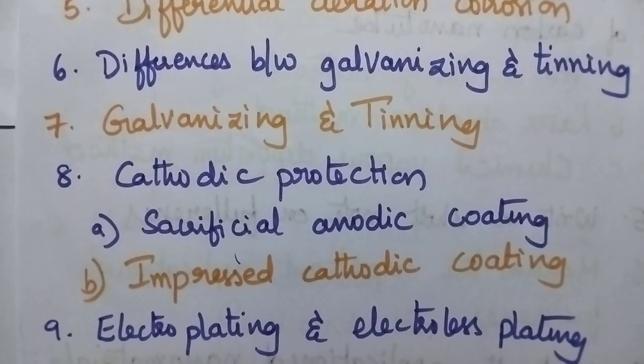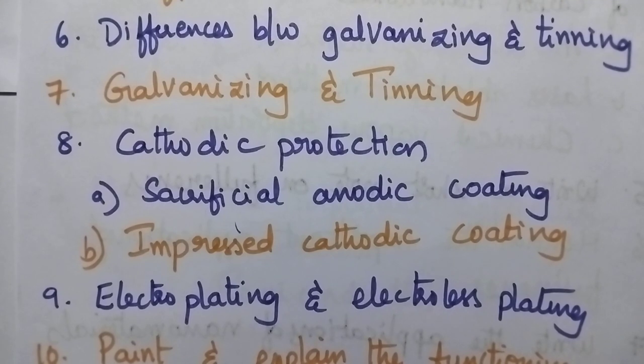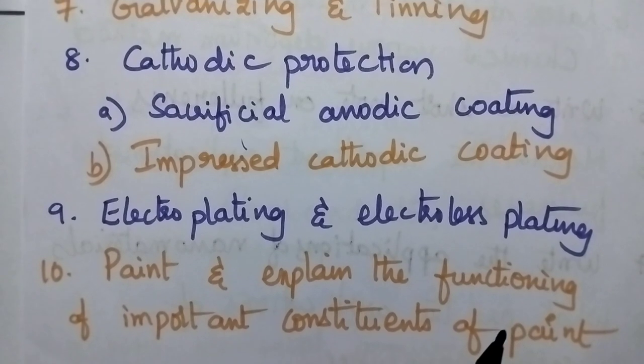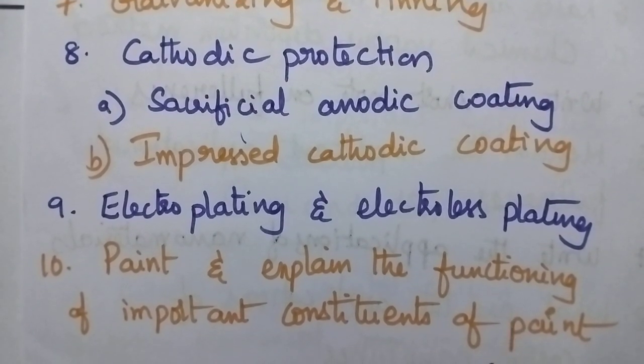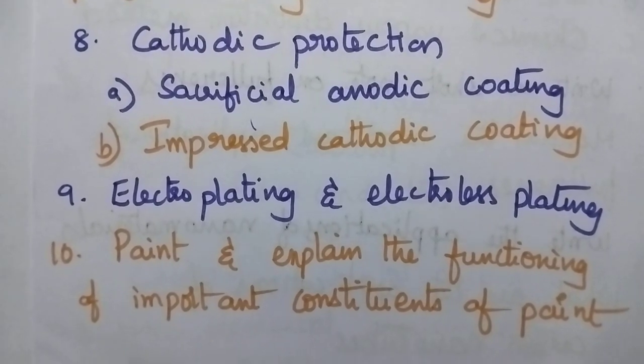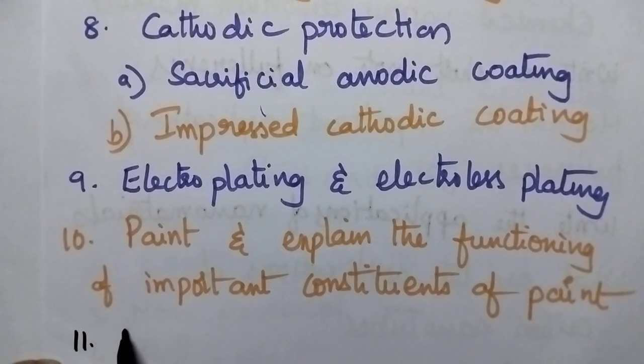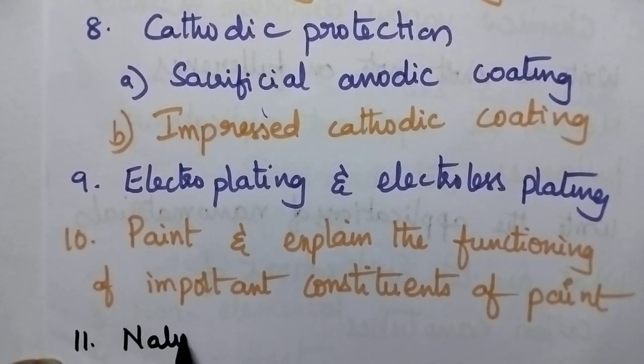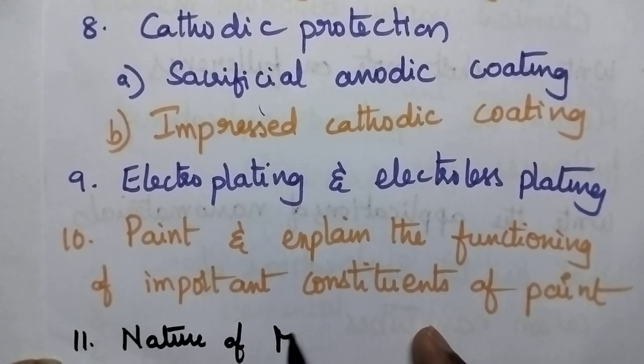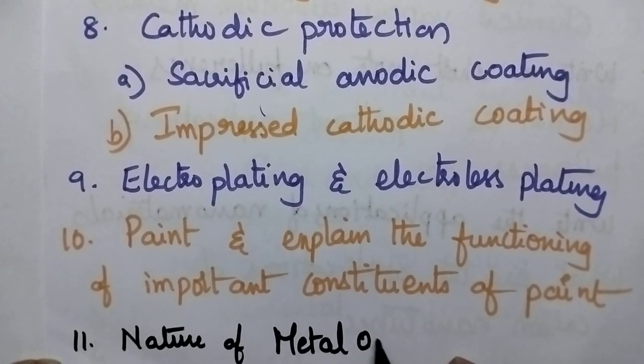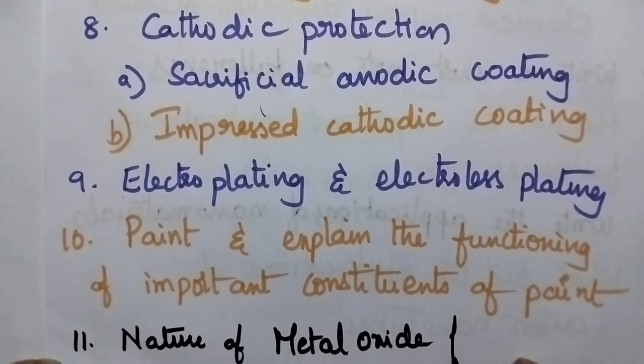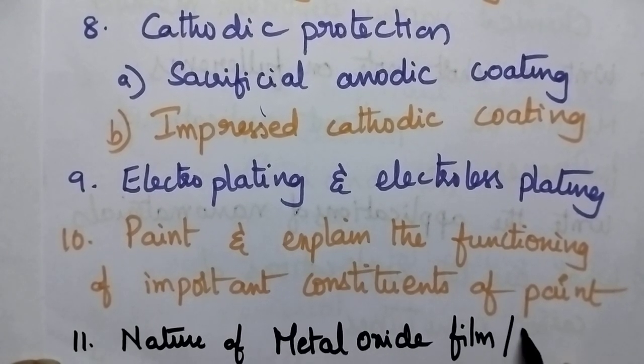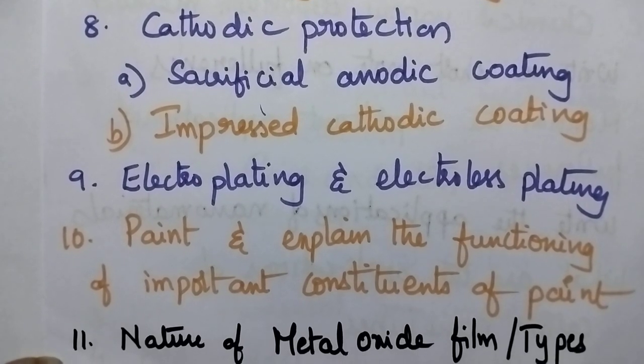cathodic protection which includes sacrificial anodic protection, impressed current cathodic protection, electroplating and electroless plating, paint and its functioning especially the functioning of important constituents of the paint. Nature of metal oxide films that means types of metal oxide films.